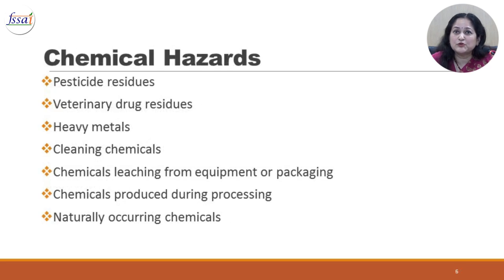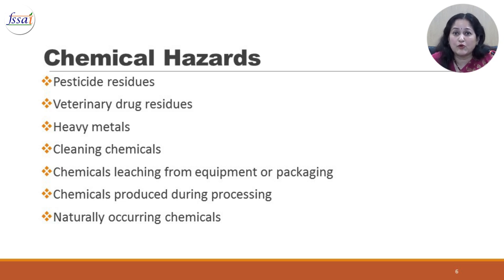Moving on to chemical hazards. These include pesticide residues, veterinary drug residues, heavy metals, cleaning chemicals from equipment and processing plants, chemicals which leach from equipment or packaging into the food, chemicals produced during processing of food, and some naturally occurring chemicals present in plant or animal foods.